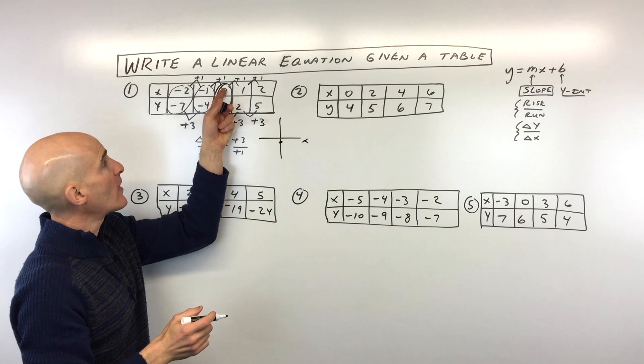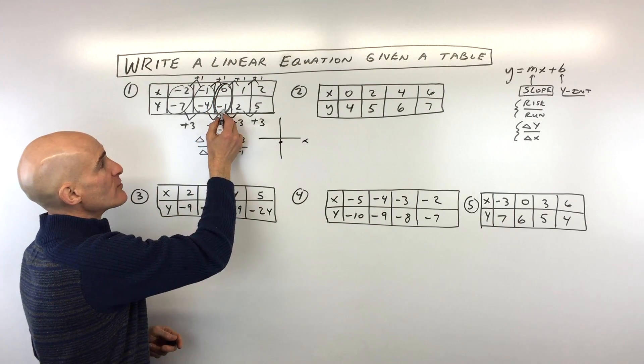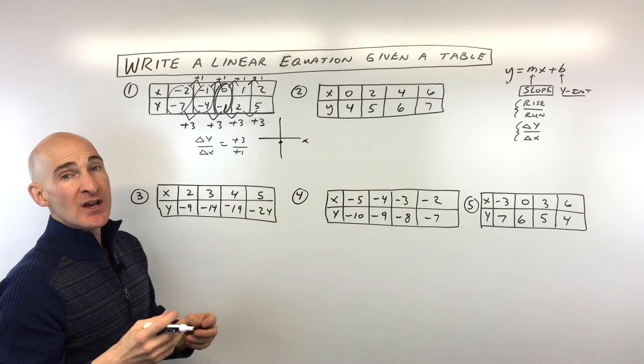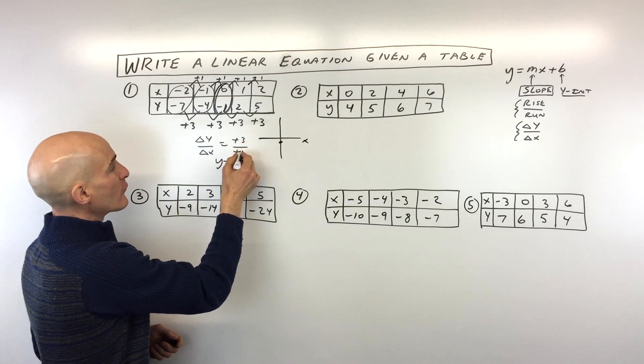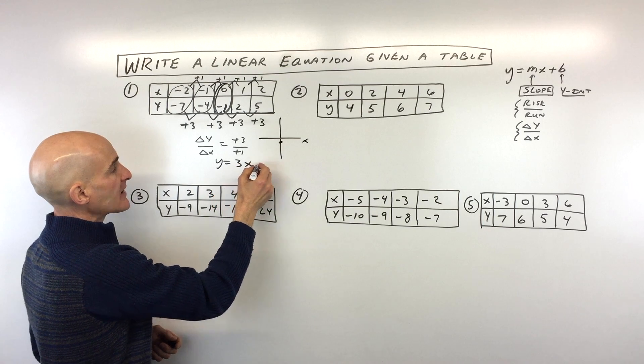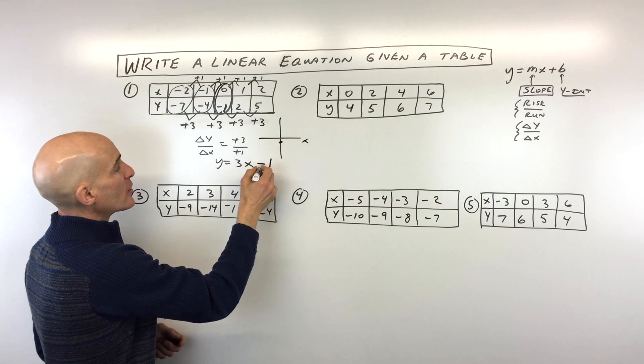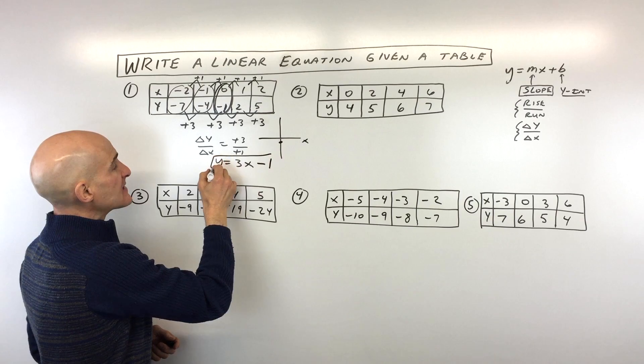So if you can identify in your table where x is 0, that's going to be your b value right there, negative 1. So if we put all that together, you can see our equation is going to be y equals 3 over 1, which is 3, x plus a negative 1, or you could just say minus 1. And that's the equation of our line.